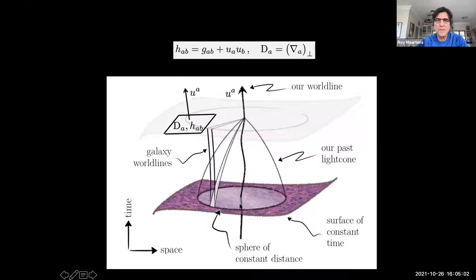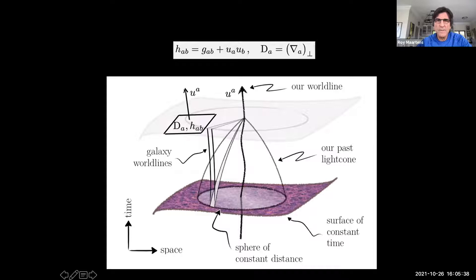In this spacetime picture, we have the observer's worldline with the four-velocity of the observer, typically one of the unique physical choices for a four-velocity field to be co-moving with the matter. We have fundamental observers, the past light cone of the observer, the observable region, and a constant-time surface. The key point about the covariant 1+3 approach is that at each point in spacetime you split the space into a time axis along the four-velocity, and in the tangent space orthogonal to that you have a projected covariant operator and a projected metric.